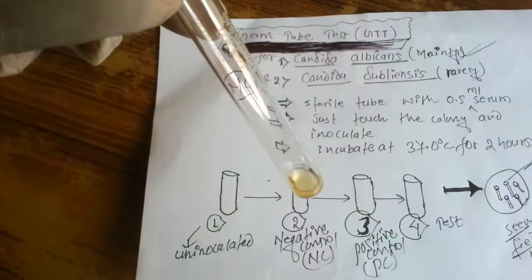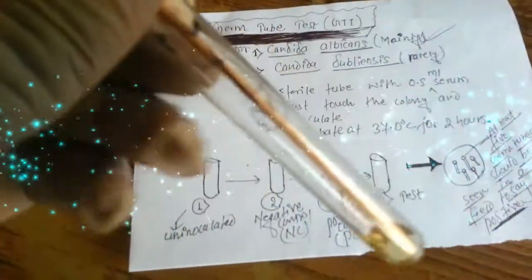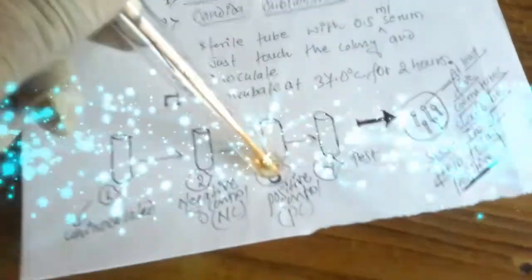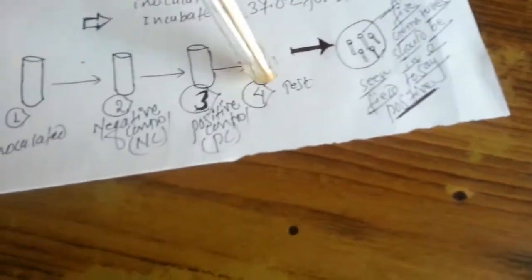Same procedure also applied for negative control, positive control, and un-inoculated tubes. Use Candida krusei, Candida albicans, and without using colony from growth media respectively.